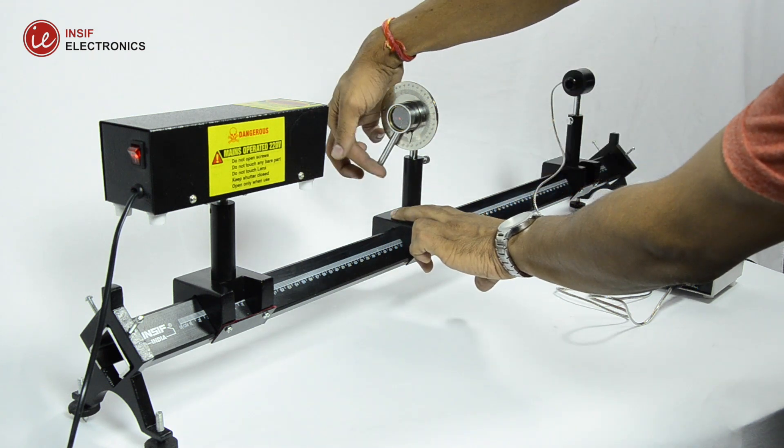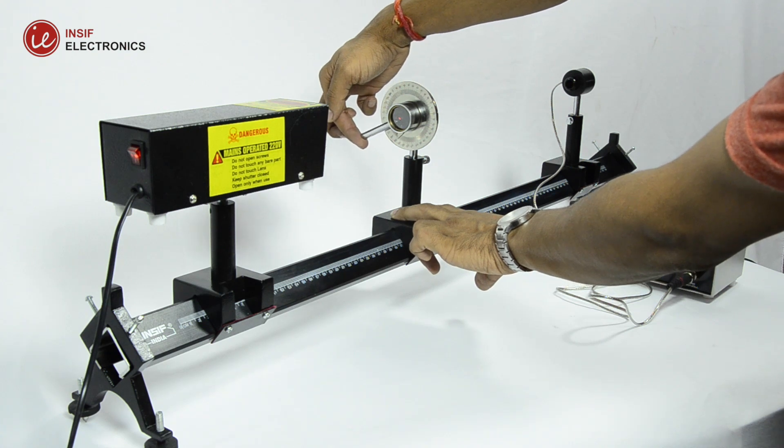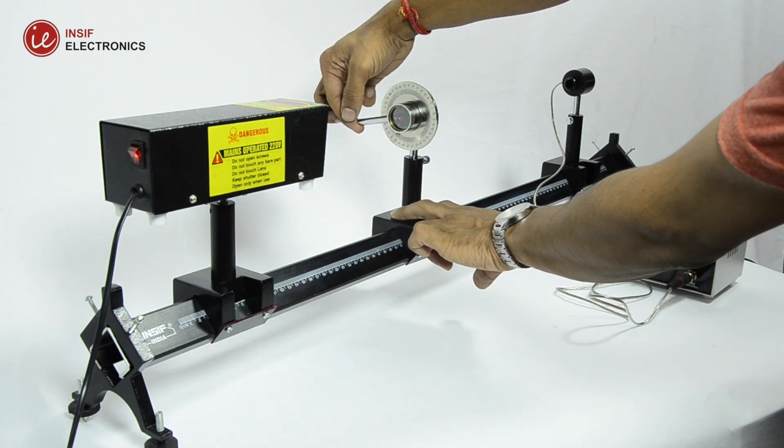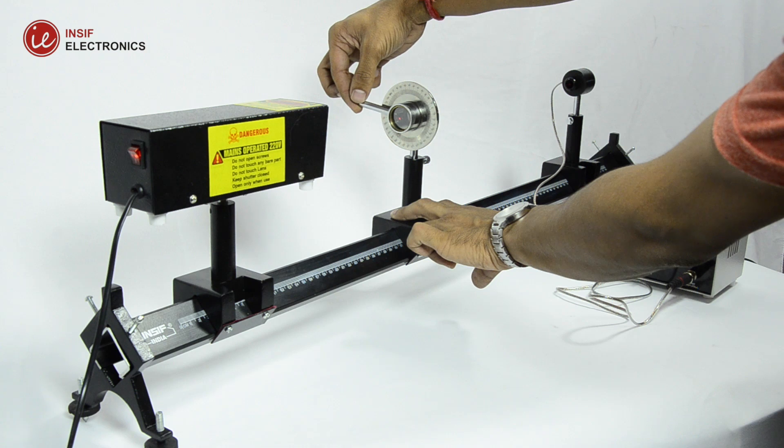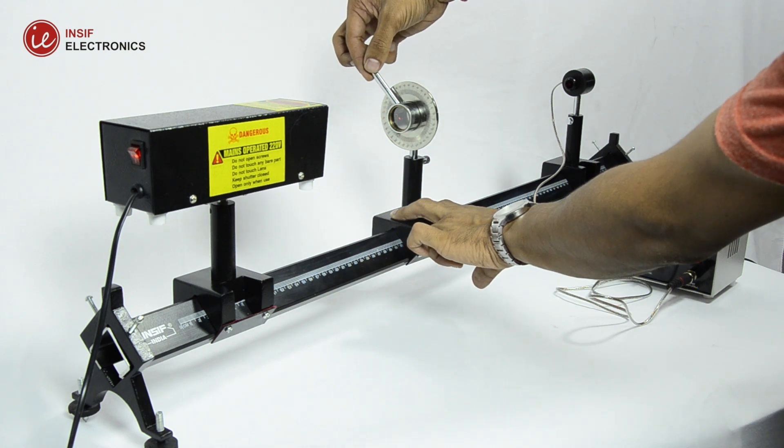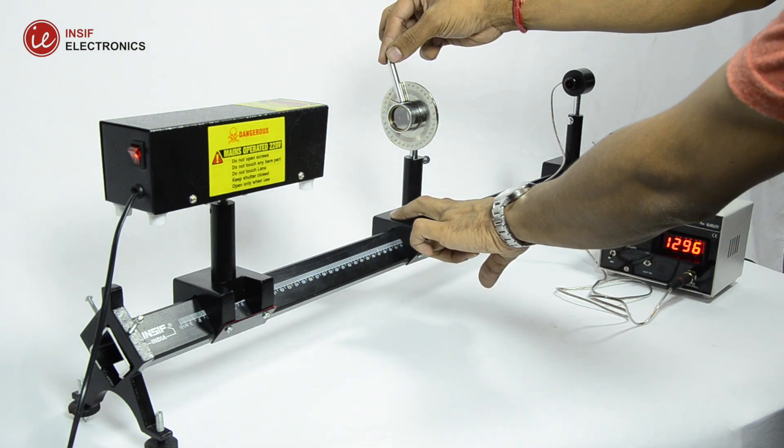When θ equals 90 degrees or 270 degrees, the transmission axis of the analyzer and the polarizer are perpendicular and the intensity of light transmitted by the analyzer is minimum.